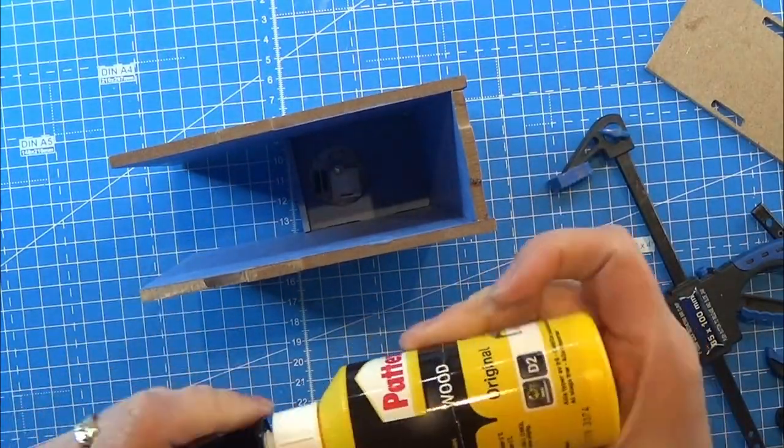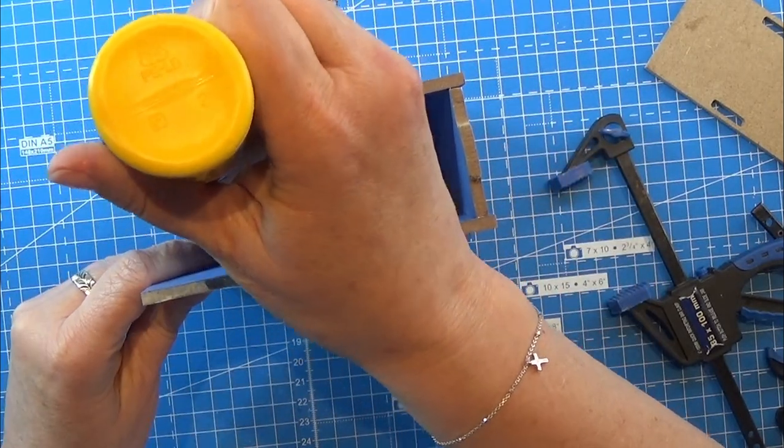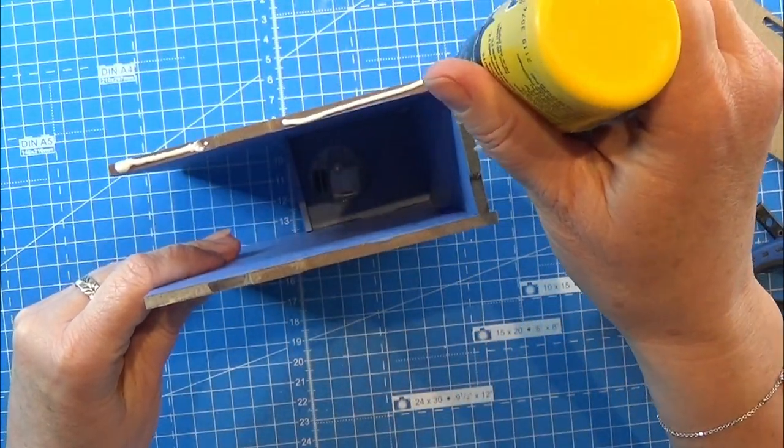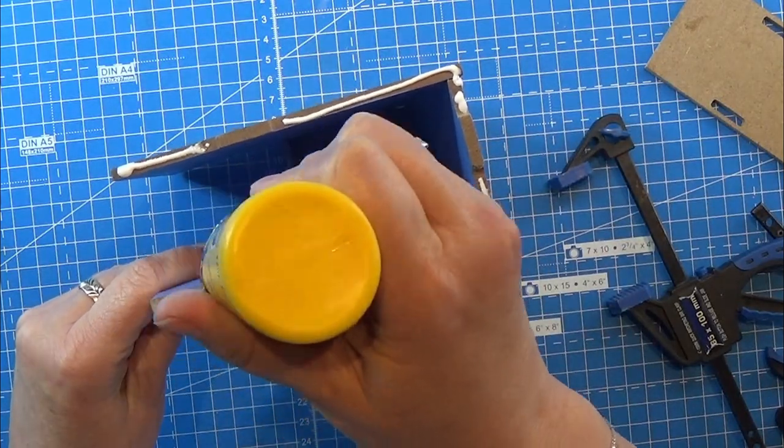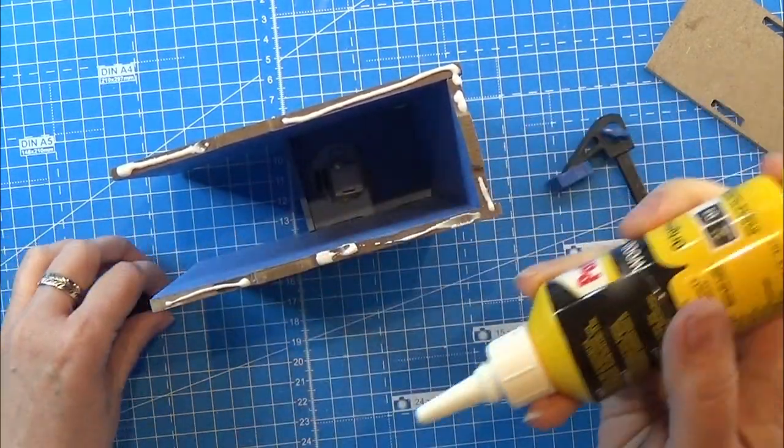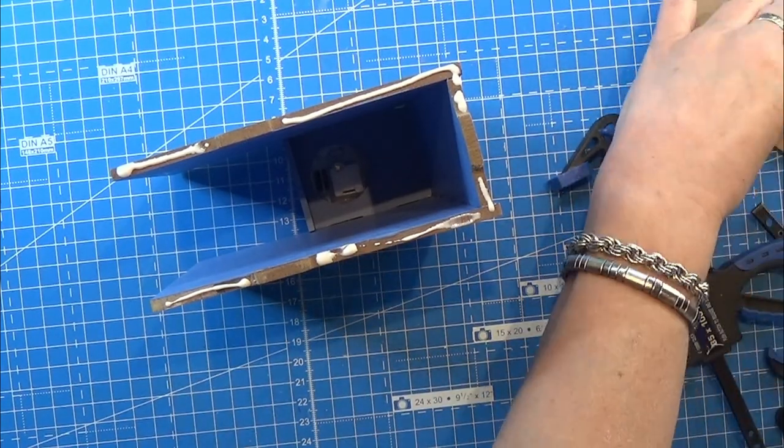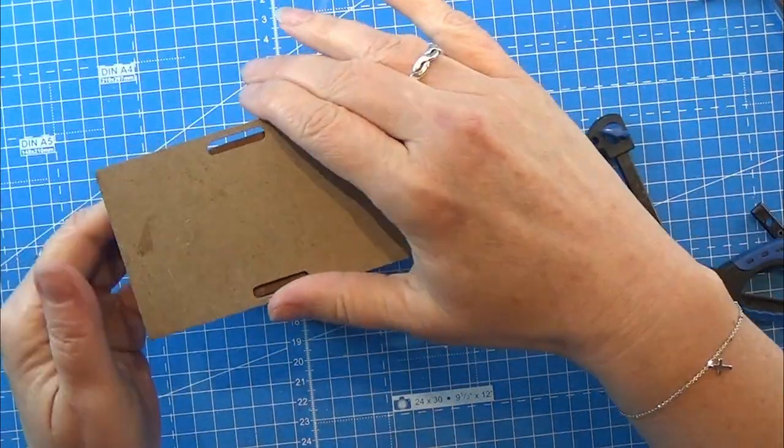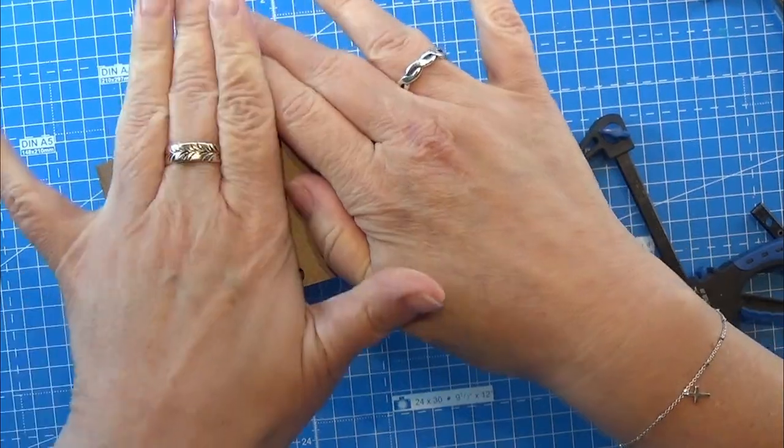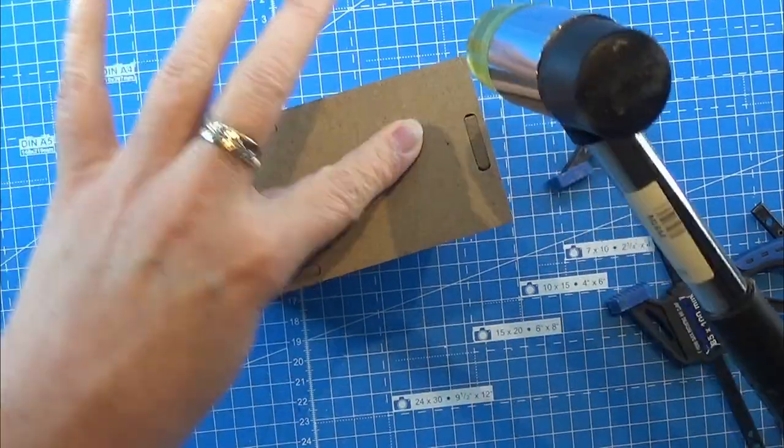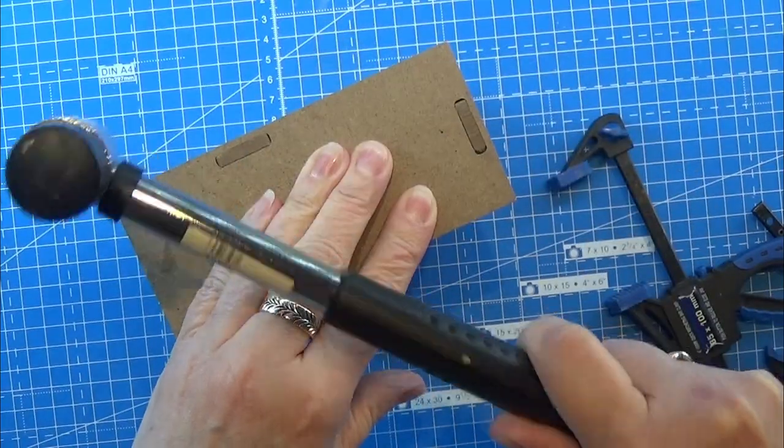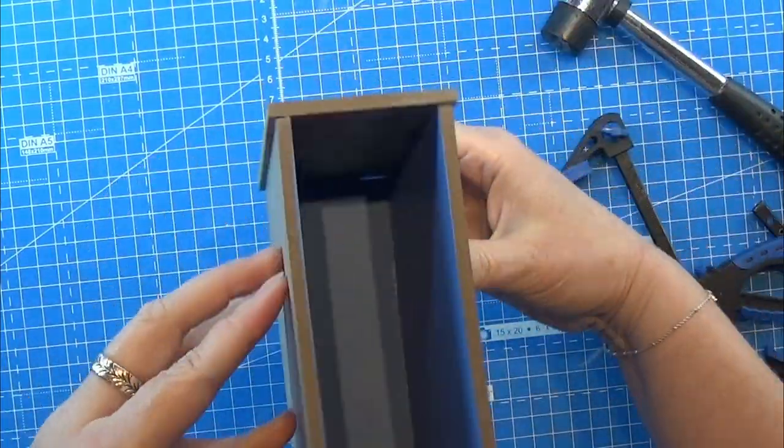So again I'm gluing it here at the bottom part, all the way around. Then I'm going to place the bottom part, and again I'm using my hammer to force it down in place. Then I let that dry for a few hours before I continued.